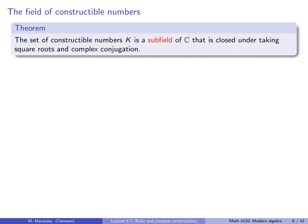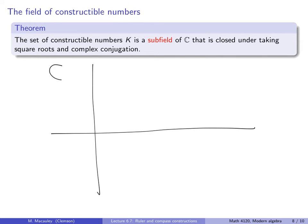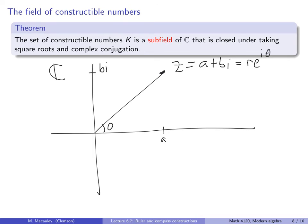These lemmas are enough to prove the following theorem: the set of constructible numbers K is a subfield of ℂ — equivalently, an extension field of the rationals — that is closed under taking square roots and closed under complex conjugation. If Z = A + Bi = Re^{iθ} is a constructible complex number, then both the square root √Z = √R · e^{iθ/2} and the complex conjugate Z̄ = A − Bi = Re^{−iθ} are also constructible.